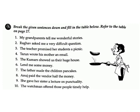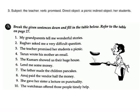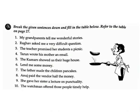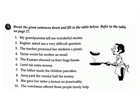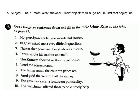3. The teacher promised her students a picnic. Answer — subject: the teacher; verb: promised; direct object: a picnic; indirect object: her students. 4. Tarun wrote his mother an email. Answer — subject: Tarun; verb: wrote; direct object: an email; indirect object: his mother. 5. The Kumars showed us their huge house. Answer — subject: the Kumars; verb: showed; direct object: their huge house; indirect object: us.